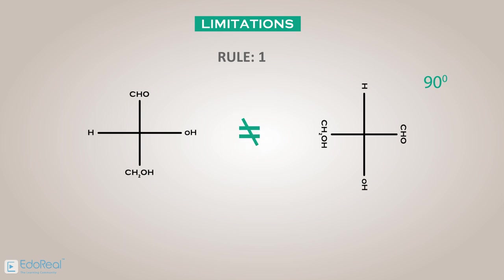Let's see the limitations of Fischer projection. Let us take the Fischer projection formula we have discussed earlier. Rule 1: The Fischer projection is a two-dimensional perspective, so we cannot rotate this by 90 degrees in a plane. The result will not be equal to the original molecule.